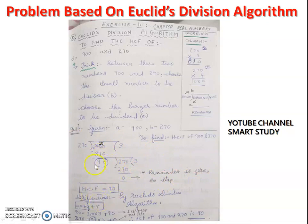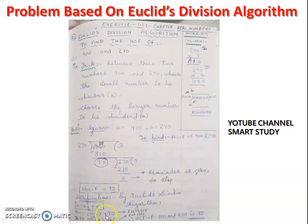We can verify this answer using Euclid's division algorithm A = BQ + R. Step 1: A is 900, B is 270, Q is 3, R is 90. Step 2: A is 270, B is 90, Q is 3, R is 0. Since we get remainder 0, HCF is confirmed as 90.